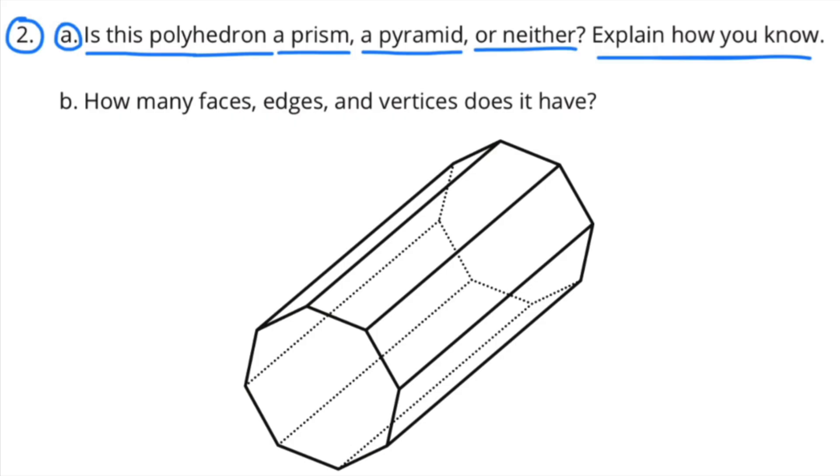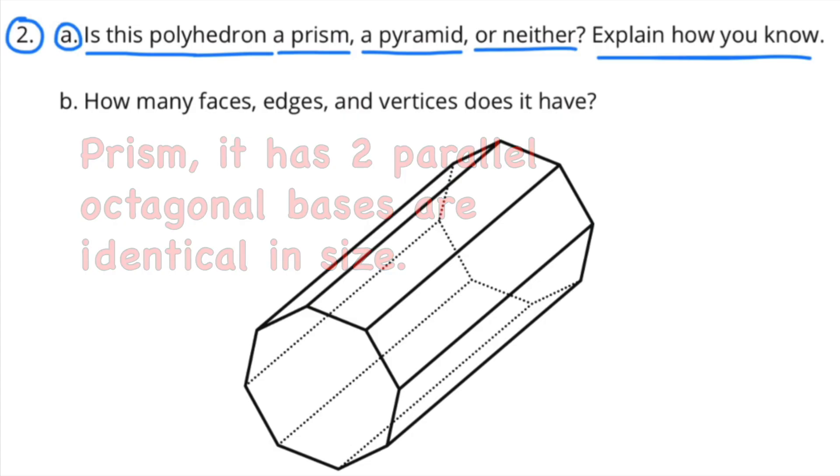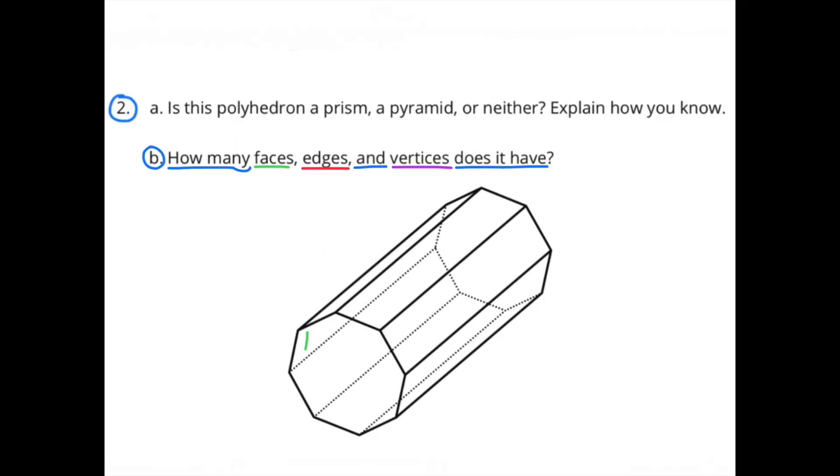It's a prism. It has two parallel octagonal bases that are identical in size. Part B: How many faces, edges, and vertices does it have? First, let's count the faces: 1, 2, 3, 4, 5, 6, 7, 8, and these two bases are also considered faces, so 8 plus 2 equals 10. This has a total of 10 faces.